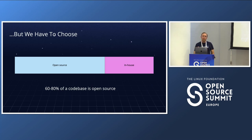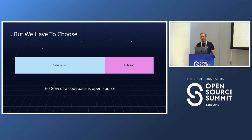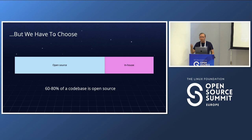The fact is we have to choose. Almost all organizations must make open source component choices. Looking at available data, around 60 to 80 percent of a codebase is purely open source — varying between organizations, maybe 30% in some cases and 95% in others — but 60 to 80% is the typical range.